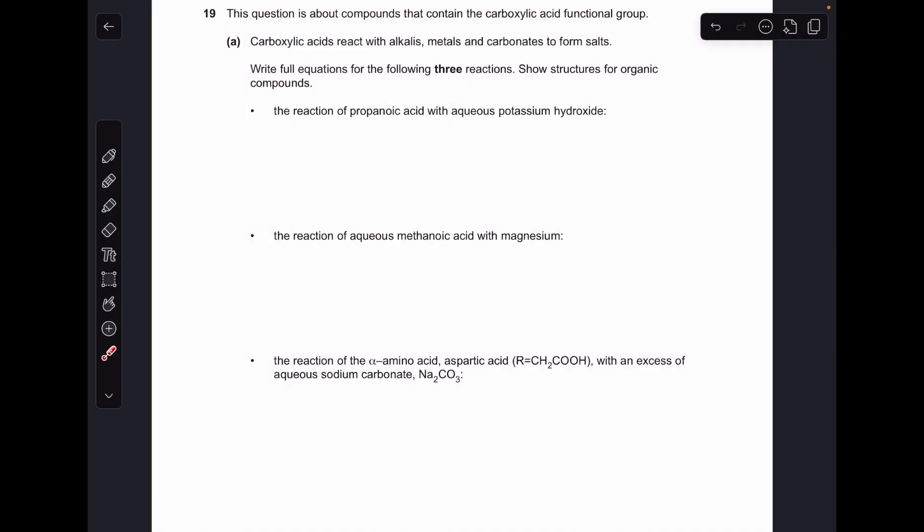Okay, so make a start. Part A is testing our knowledge of the reaction between the carboxylic acid group and alkalis, metals and carbonates. There's the first one, you can see what's happened - the H plus ion of the acid has been replaced by the potassium ion, so we get the salt and water there.